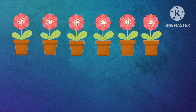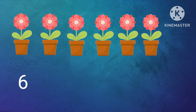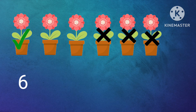How many flowerpots we have? Shall we count? 1, 2, 3, 4, 5, 6. There are 6 flowerpots. In 6 flowerpots we have taken 3 flowerpots. So how many we have now? Shall we count? 1, 2, 3. There are 3 flowerpots. So 6 minus 3 equal to 3.